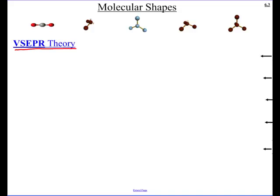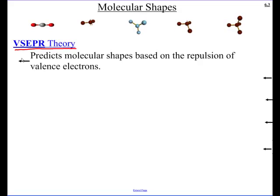And so that repulsion is what gives the molecules their three dimensional shape. So VSEPR theory is simply predicting the shapes based on the repulsion of these valence electrons.